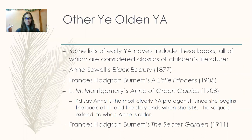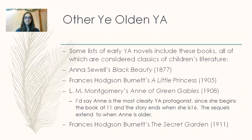Now, other early books that could be YA — this is really before we start labeling the genre young adult. Here are some early novels that are already considered classics of children's literature: Anna Sewell's Black Beauty published in 1877, Frances Hodgson Burnett's A Little Princess published in 1905, L.M. Montgomery's Anne of Green Gables published in 1908, and Frances Hodgson Burnett's The Secret Garden published in 1911.